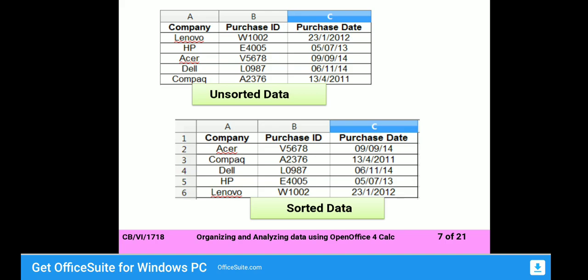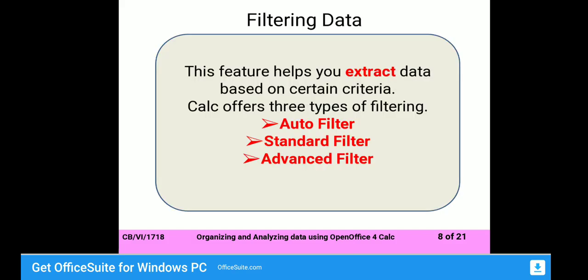After applying these steps, you can see the result — the unsorted data will be sorted according to the given criteria. Next is filtering the data. This feature helps you to extract data based on certain criteria.